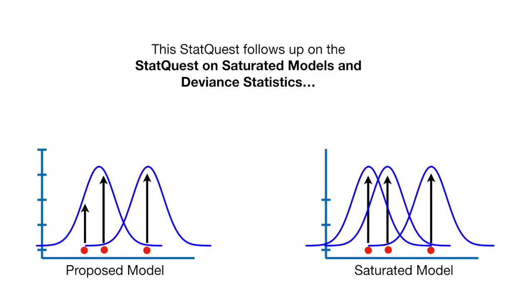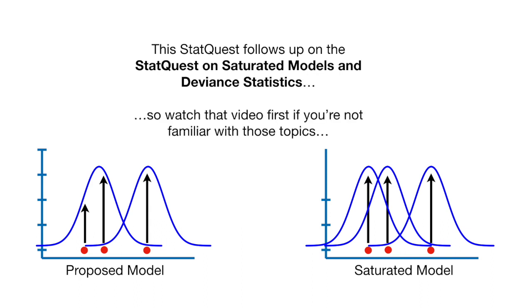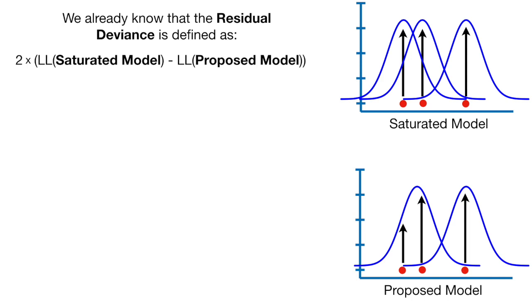Today we're going to talk about deviance residuals, and they're going to be clearly explained. This StatQuest follows up on the StatQuest on saturated models and deviance statistics, so watch that video first if you're not familiar with those topics. We already know that the residual deviance is defined as 2 times the difference between the log likelihood of the saturated model and the log likelihood of the proposed model.